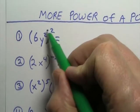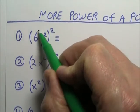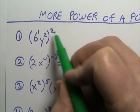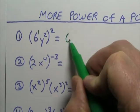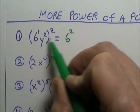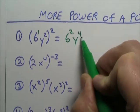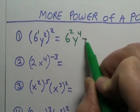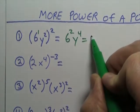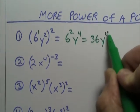Number one. Remember it's going to multiply each one of these exponents by this exponent right here. So that's going to be 6 to the 2 times 1, that's 2, and y to the 2 times 2, that's 4. 6 squared — that is 6 times 6 is 36 — and y to the 4th.